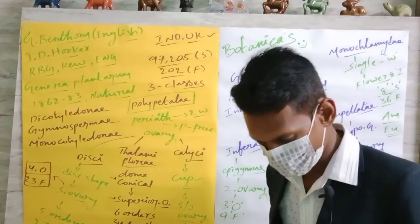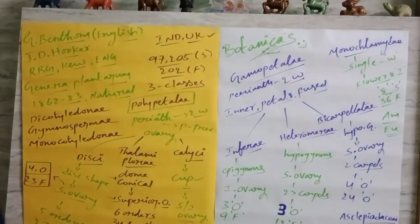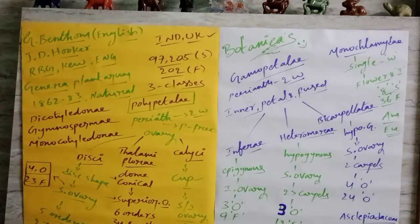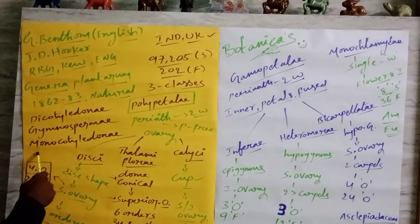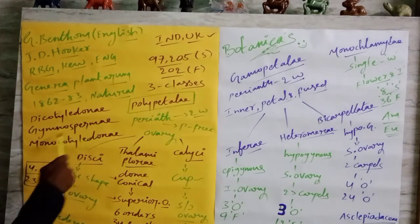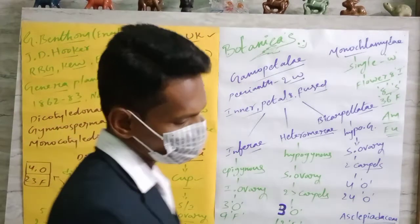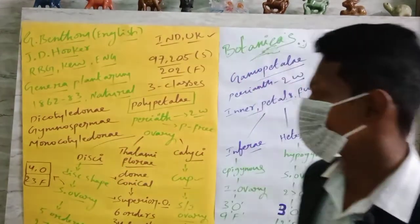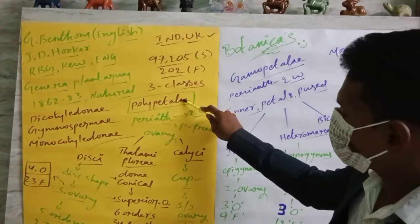Our famous scientists primarily classified flowering plants under three classes: Dicotyledone, Gymnospermae, and Monocotyledone. These three classes are broadly classified under three subclasses: Polypetalae, Gamopetalae, and Monochlamydeae.